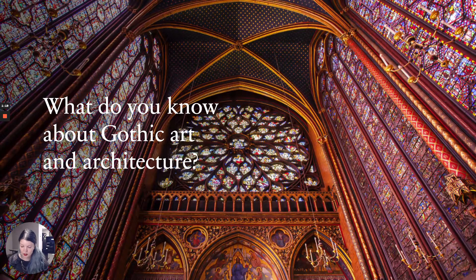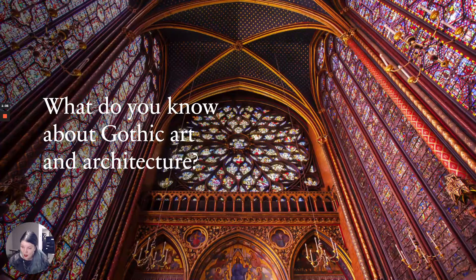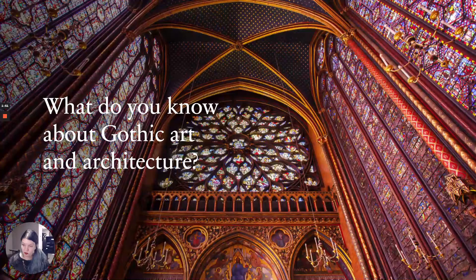The Gothic style starts in the French region surrounding Paris called Île-de-France — not actually an island, but a little area in the middle of France surrounding Paris. At the time, people who were contemporaneous to this movement didn't call it Gothic. They called it Opus Fractum, or French work, or sometimes Opus Modernum, which means modern work. So this was the modernism of its time, which is interesting to think about.